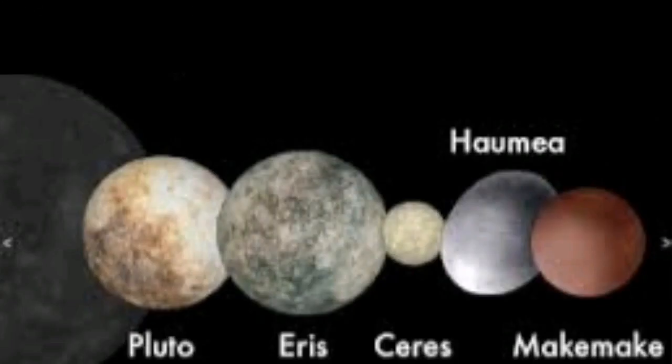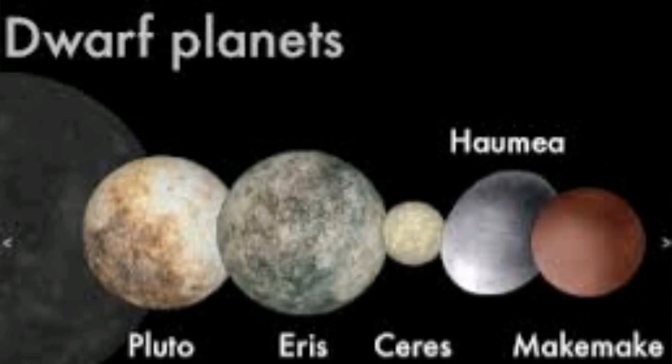Therefore, they concluded that Pluto has to be in a group of its own. They called the group dwarf planets, whereas dwarfs are very short people. So Pluto is a very small planet.